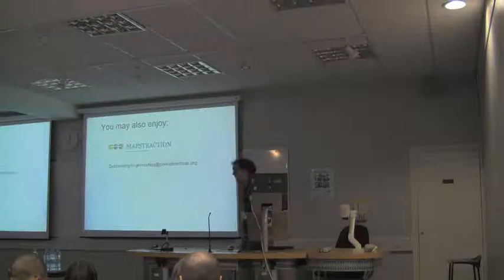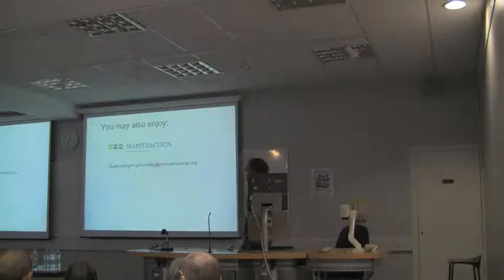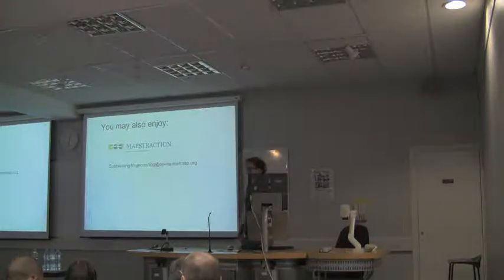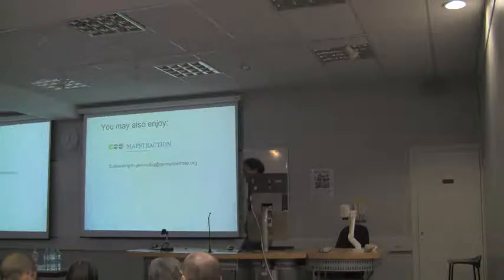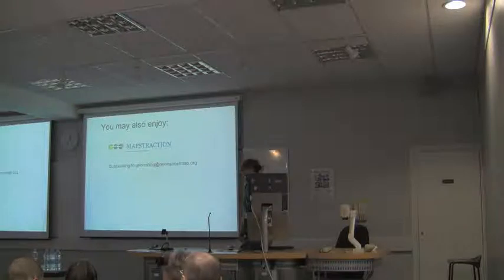If you like Geocoder::Many, you might also like these related services. One of the main uses of geocoding is to get a longitude and latitude and put that on a map. If you're doing that, you're probably interested in Mapstraction, which is a JavaScript abstraction library. Also, if you're interested in how geocoding actually works, you may be interested in the OpenStreetMap geocoding mailing list, where there's an active community of people actually building a geocoder. If that interests you, please subscribe and get involved.